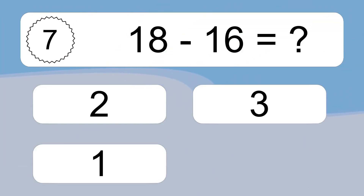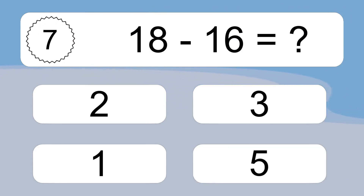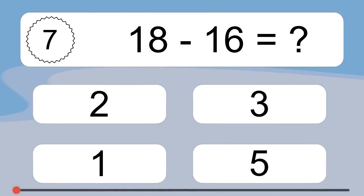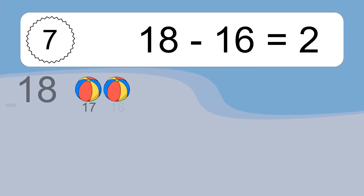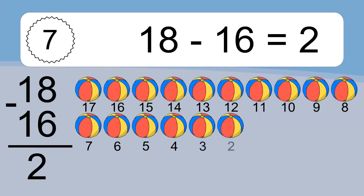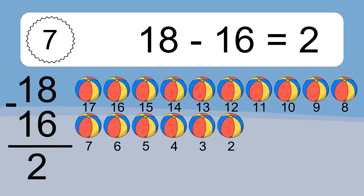18 minus 16 equals what? 18 minus 16 equals 2. Let's count it: 17, 16, 15, 14, 13, 12, 11, 10, 9, 8, 7, 6, 5, 4, 3, 2.